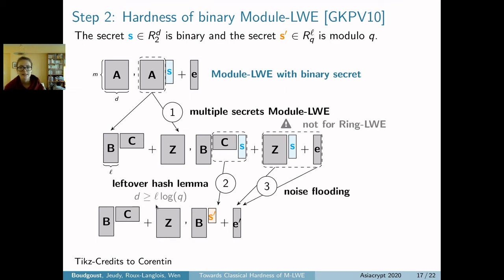Then the third key ingredient is noise flooding. We want to argue that having Z·S + E and E', where E and E' follow the same distribution, that those two distributions are indistinguishable for an adversary. What we end up with is a sample of the module-LWE problem with uniform secret. If it's hard to find this S', and we show those distributions are close enough, and assume the hardness of module-LWE with multiple secrets, then module-LWE with binary secret is also hard to solve.